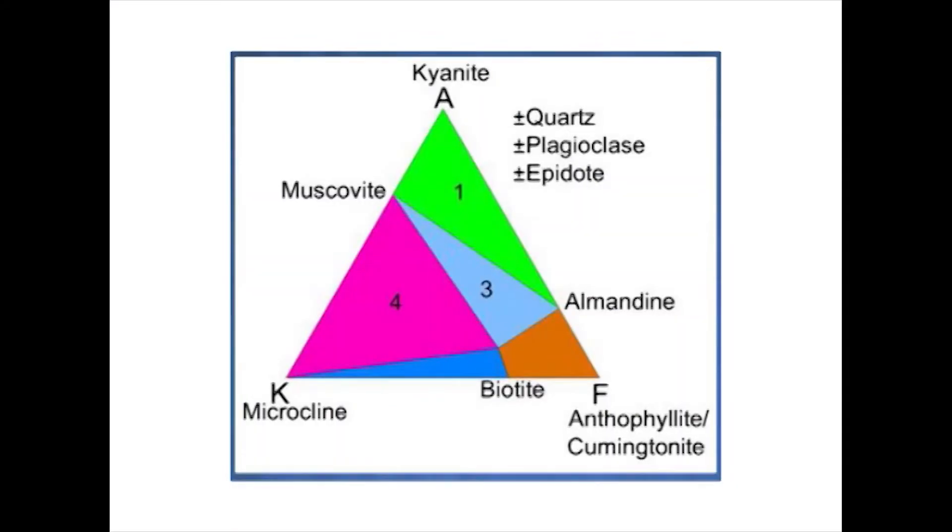The AKF diagram has lost much of its usefulness since a better method is now available for the representation of Fe-Mg and Al-containing minerals which coexist with Biotite and Muscovite or Potash Feldspar. This method is known as the AFM projection.